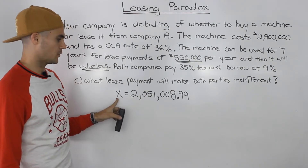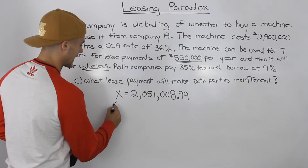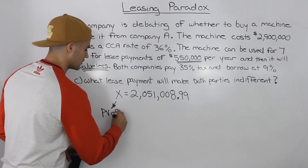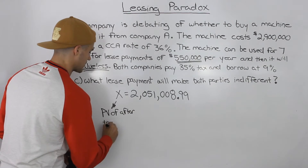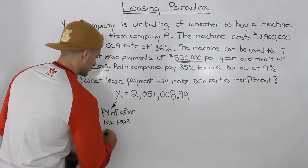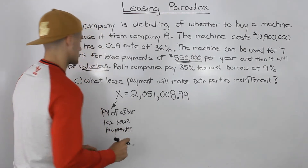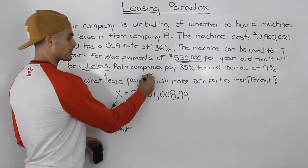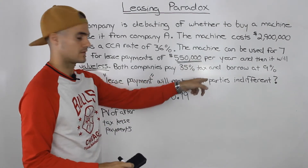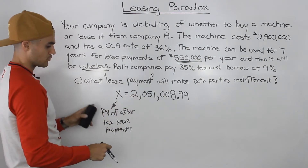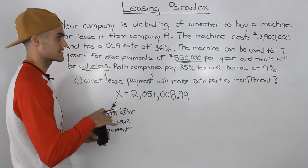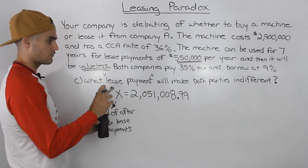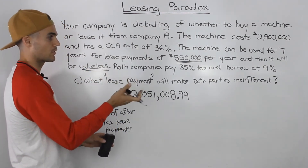But what does this x represent? If you remember, we inputted x into the net advantage to leasing formula and it represented the present value of the after-tax lease payments. The question is asking for the lease payment per year, and this figure represents the present value of all of the after-tax lease payments. So basically this is the present value of an annuity and we have to solve for what each payment is going to be per year.